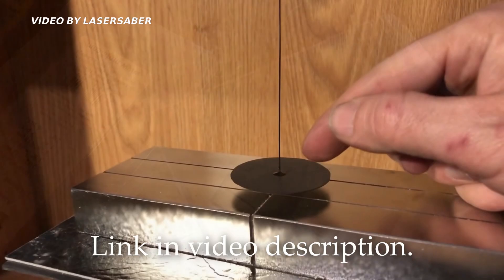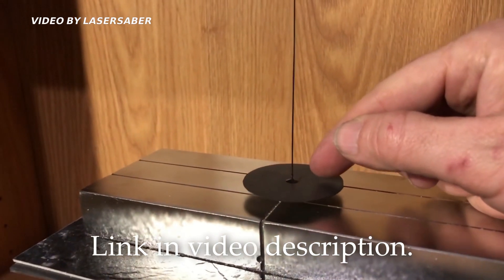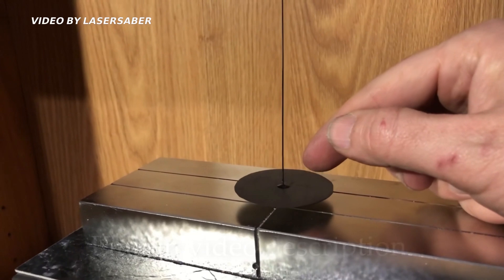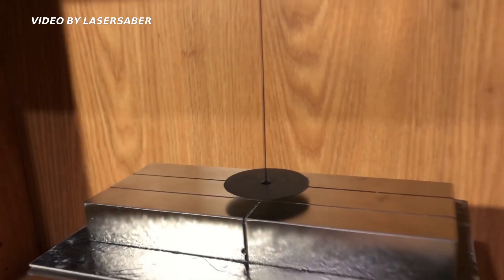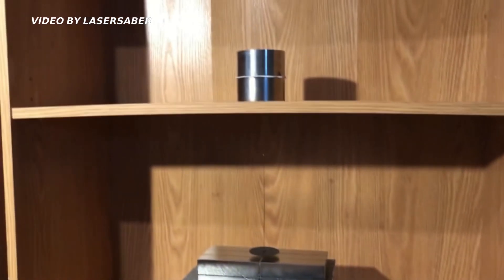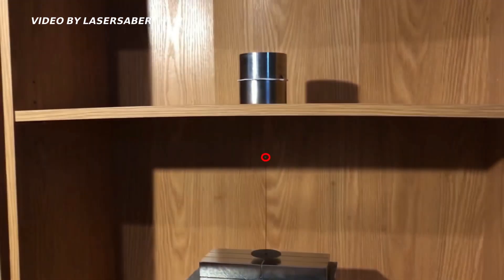Here's how you can achieve an exceptionally large levitation gap. In this video made by LaserSaber, we can see the thin piece of PG being pushed up by strong magnetic field of the magnetic array below, while the small magnet at the end of the light rod is attracted by the magnet above.